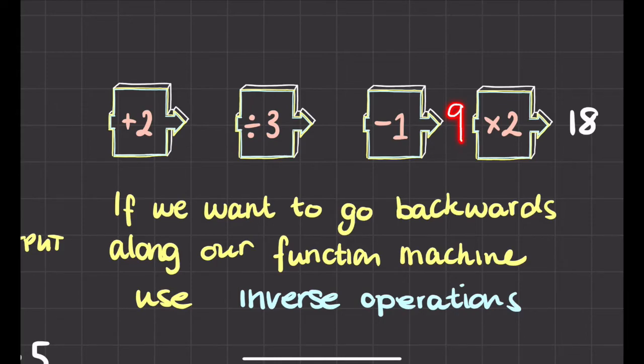Okay, right, for this next bit then, what number do we take 1 away from to give us 9? That's the same as saying what's 9 plus 1. 10. What number do you divide by 3 to give you 10? Well, that's the same as saying what's 10 times 3. So 10 times 3 is 30.